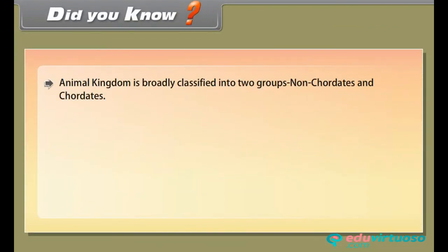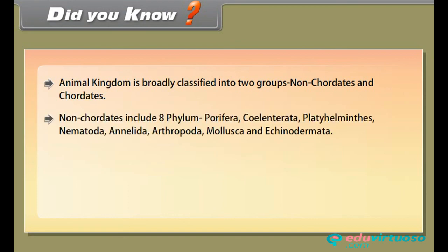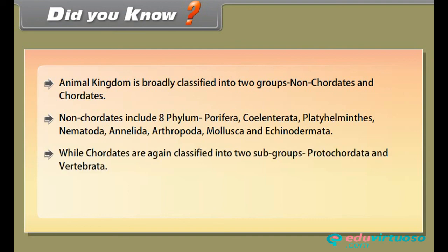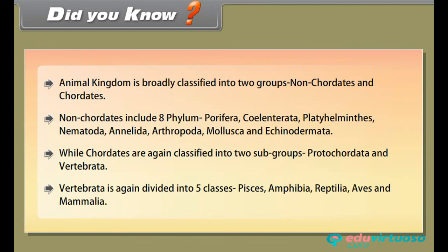Animal kingdom is broadly classified into two groups: non-chordates and chordates. Non-chordates include 8 phyla: Porifera, Coelentrata, Platyhelminthes, Nematoda, Annelida, Arthropoda, Mollusca, and Echinodermata. Chordates are again classified into two subgroups: Protochordata and Vertebrata. Vertebrata is again divided into five classes: Pisces, Amphibia, Reptilia, Aves, and Mammalia.